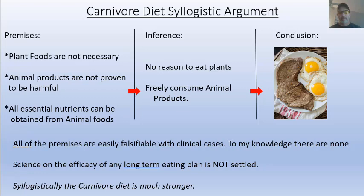The carnivore diet syllogistic argument. This is what I understand from people who promote this, and how I would frame the argument in a debate. The premises are: plant foods are not necessary for human nutrition and health; animal products are not proven to be harmful; and all essential nutrients can be obtained from animal foods. The inference is: you're free to skip plants and freely consume animal products. And the conclusion — steak and eggs.